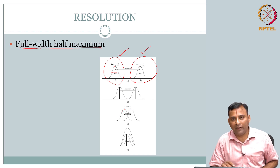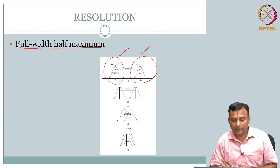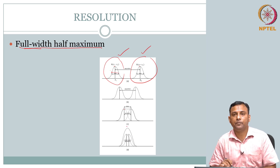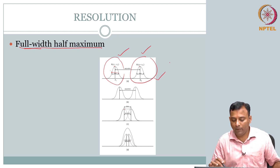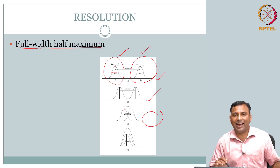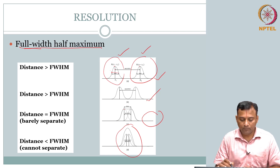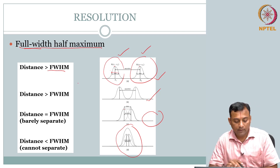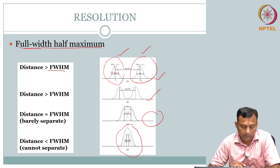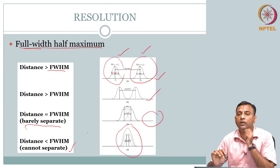When the two spread responses add up, you get one broad shallow hill rather than two distinct hills. If you push them further, you see only one hill with one maximum. So if the distance of separation is greater than the full width at half maximum, it is resolvable. If it is barely separable, that is your resolution limit. If you cannot separate, it is beyond resolution limits.